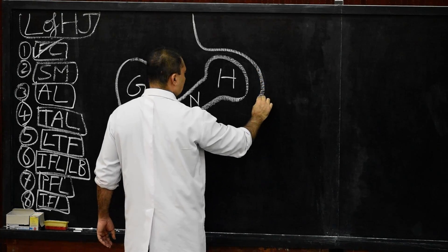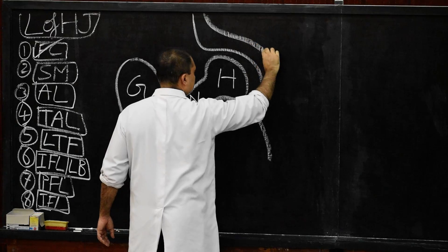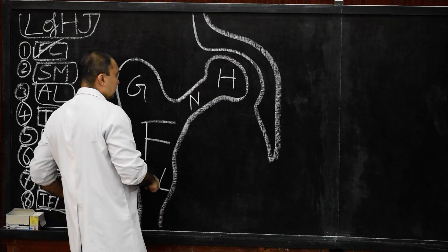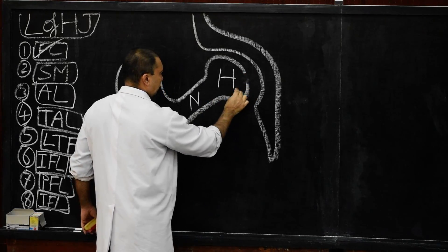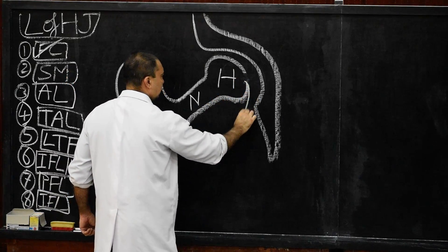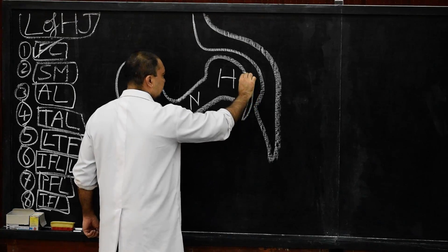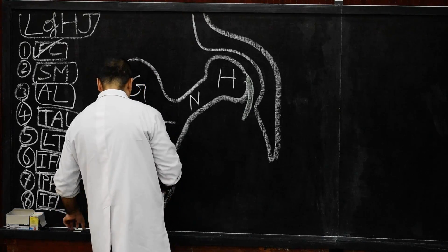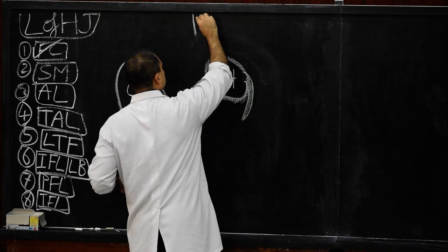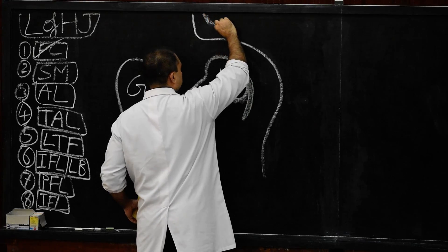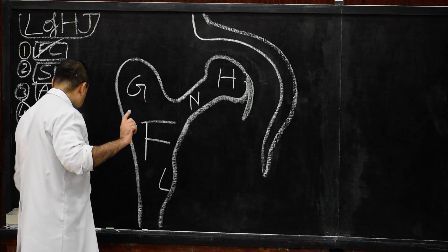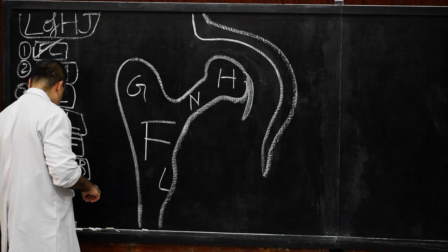Here we have the acetabular margin and a cross-section showing the acetabular cavity. On the femur we can see the fovea, where the ligamentum teres femoris is attached. We will broaden this cavity to produce more space. The fibrous capsule will be drawn in yellow color.